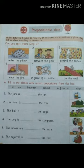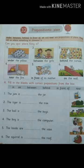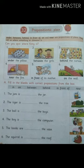Second sentence: the tiger is dash the trees. The tiger is behind the tree — yes, very good. Third: the ball is dash the boys. The ball is between the boys — yes, very good. Fourth: the ball is dash the computer. The ball is in front of the computer — yes, very good.